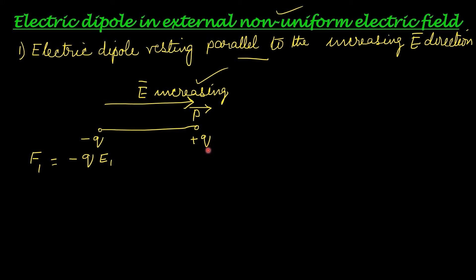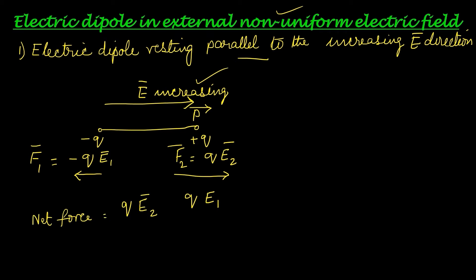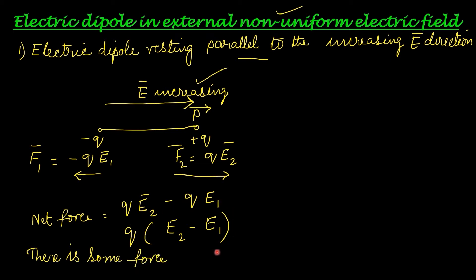The direction of force on negative q is anti-parallel to the dipole moment direction. The force on positive q is F2 = q·E2, directed parallel to the dipole moment and the increasing electric field direction — opposite to F1. The net force is F = q·E2 − q·E1 = q(E2 − E1). Since E2 is greater than E1, there is a net force. Because F2 is larger, the net force direction is along the dipole moment and the increasing electric field direction.